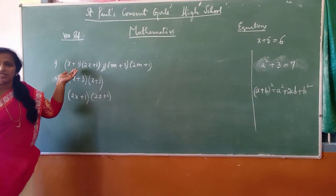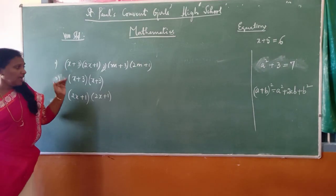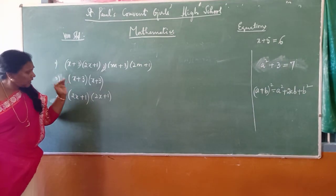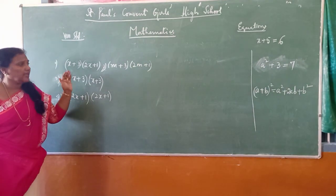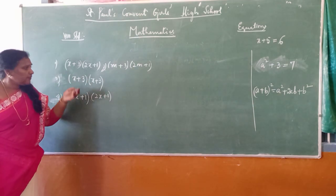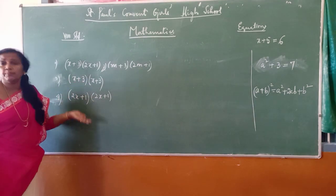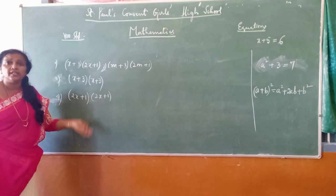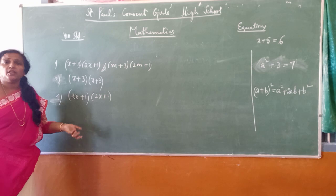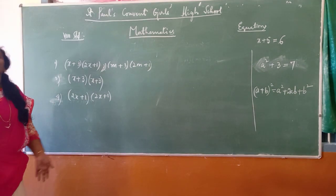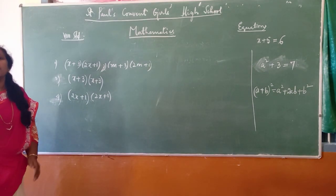The third and fourth problems are called special products. The first and second are not called special products. To find the product of the first two, you can find it by simply multiplying. But for these special products, to find the product you can make use of an identity. So, what is an identity?